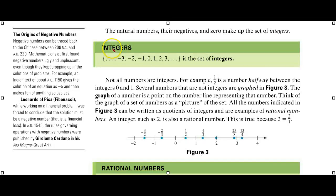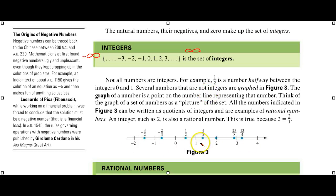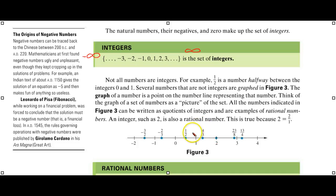So, we have defined integers, with negative infinity on one end. Our listing or roster notation shows the pattern continuing to positive infinity. Now, we see part of a number line here. Are there other numbers on the number line? Yes — right here we see one-half, and here is four-thirds. Now, all of these numbers — we think of them often as fractions.